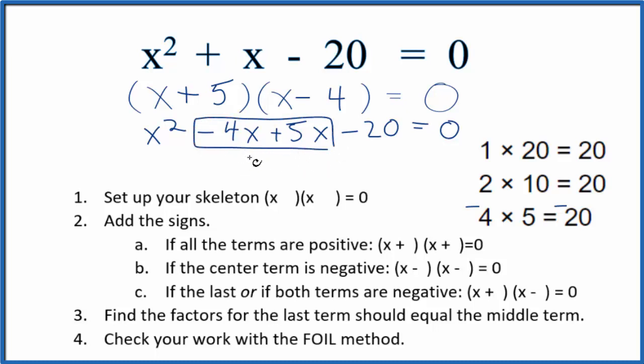We can see here we have this -4x and the 5x. -4x and 5x gives us a positive x, so we have x² + x - 20 = 0. We've done this correctly.